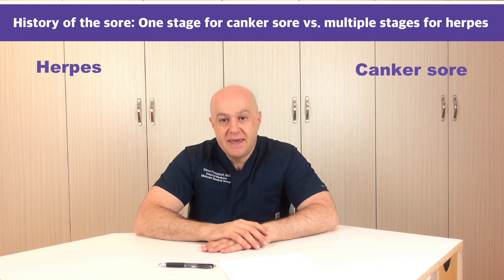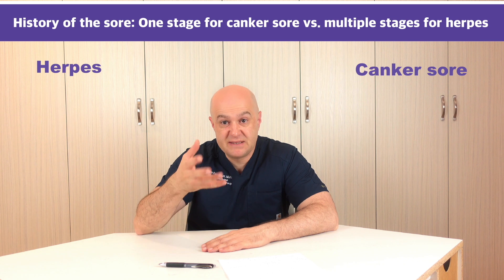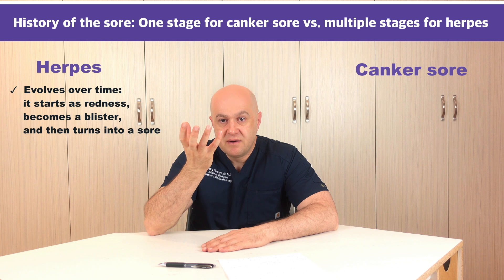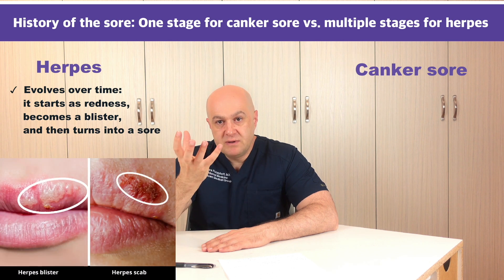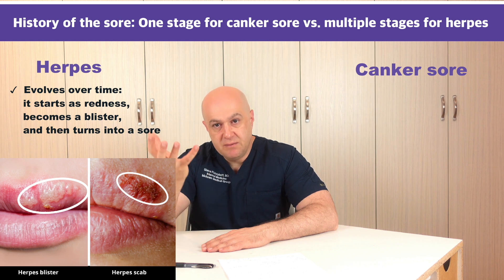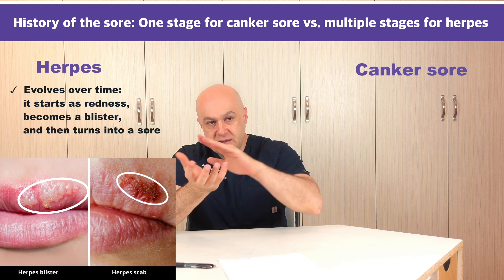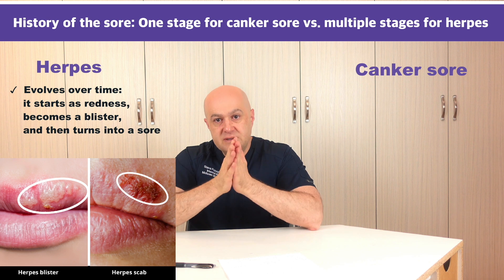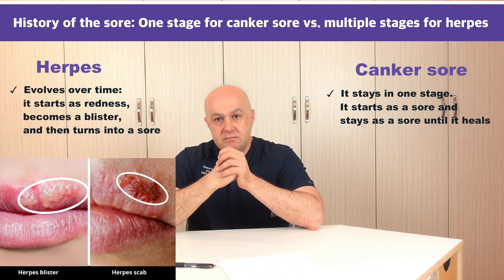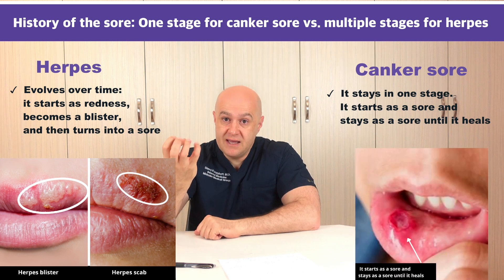Another part of the history is that herpes goes through multiple stages, while canker sore has only one stage. Herpes starts with a prodrome and nerve pain, then redness of the area, then multiple bumps that turn into blisters. The roof of the blister comes off, leaving an open sore that gets crusted and heals over time — the entire process can take about a week. Canker sore, unlike herpes, forms from minor trauma, starts as a sore that can get bigger and deeper, but stays in one stage before healing.